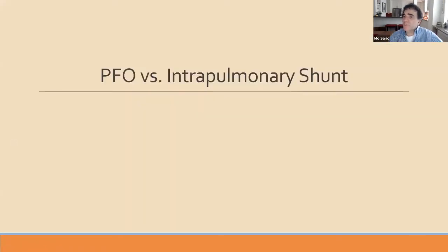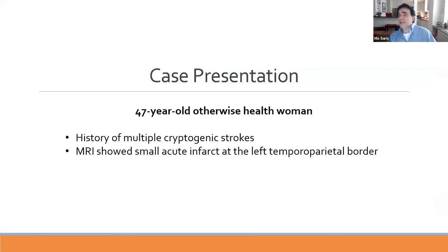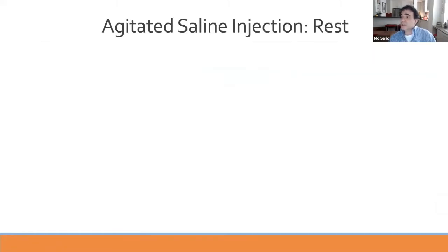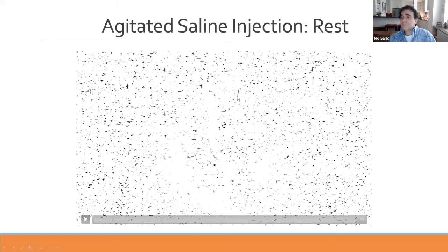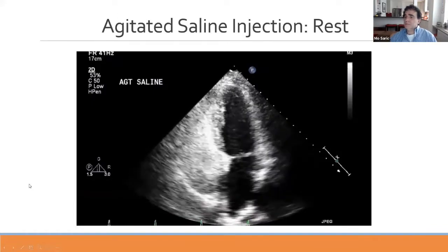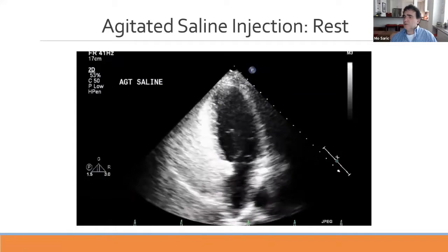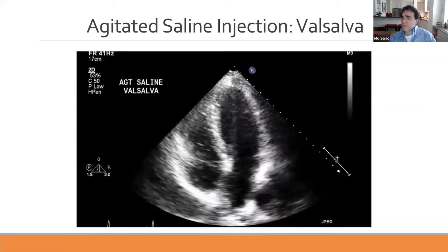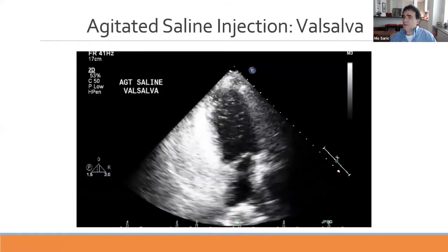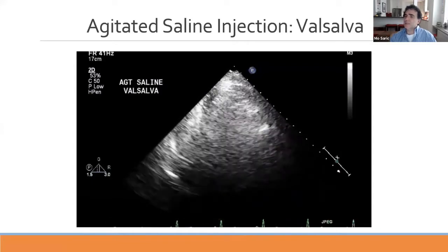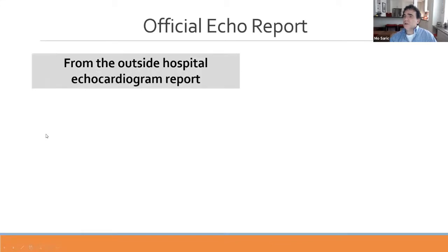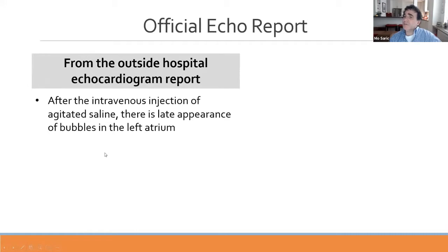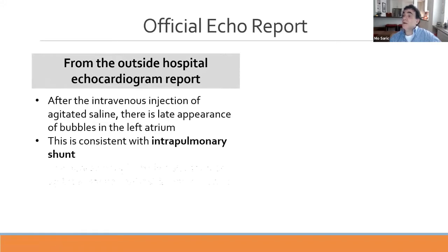Case example: a 47-year-old otherwise healthy woman with history of multiple cryptogenic strokes; MRI shows a small acute infarct at the left temporal-parietal border. Agitated saline was injected at rest, and bubbles did not show up early but eventually appeared. An outside hospital report said there was a late appearance of bubbles in the left atrium, calling it consistent with intrapulmonary shunt with a small degree of shunting—which is debatable.